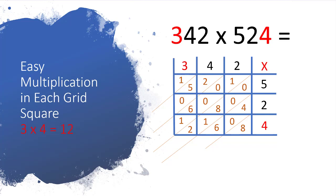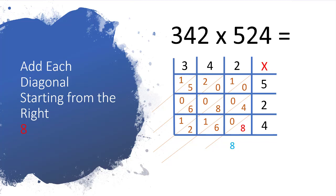So now all we do is starting from the bottom right hand side, we've got to add the numbers up. Well there's only one number in that first diagonal, that's 8, so we just pull that down and write that underneath.